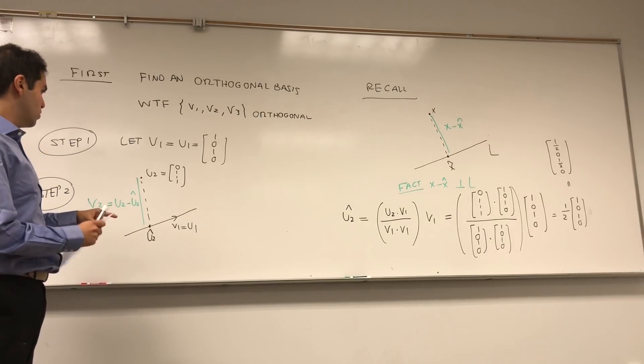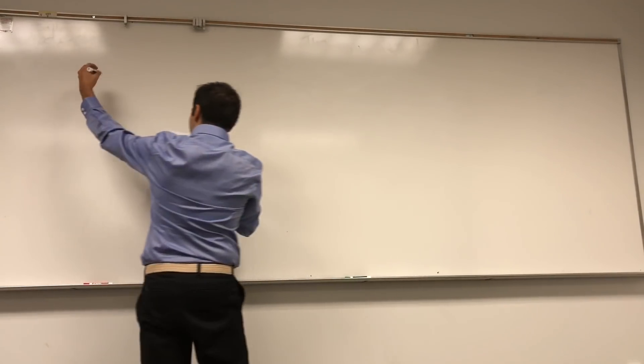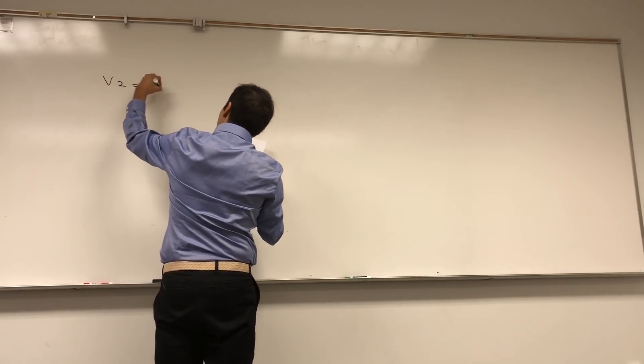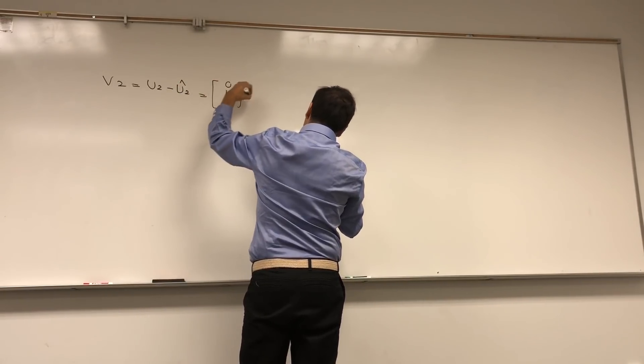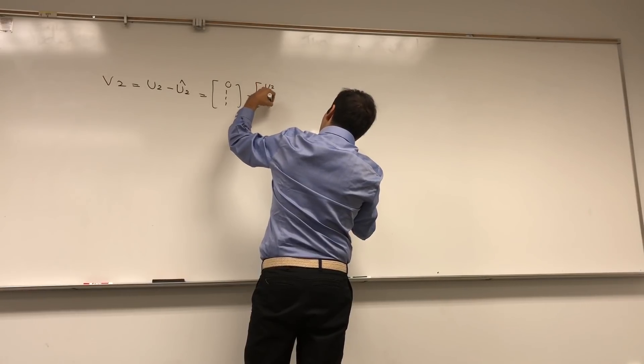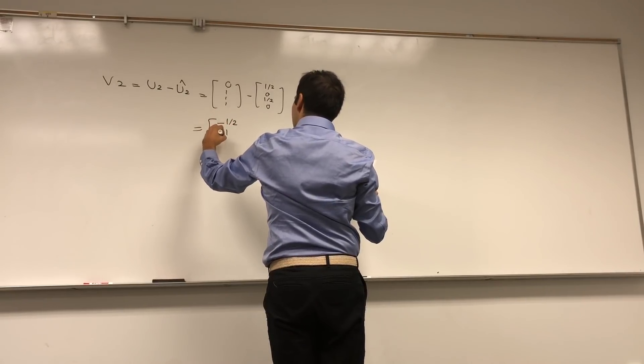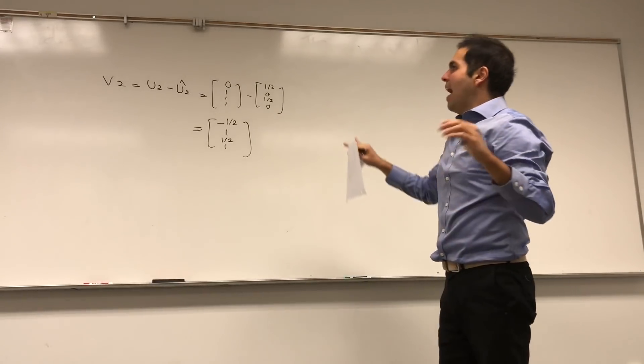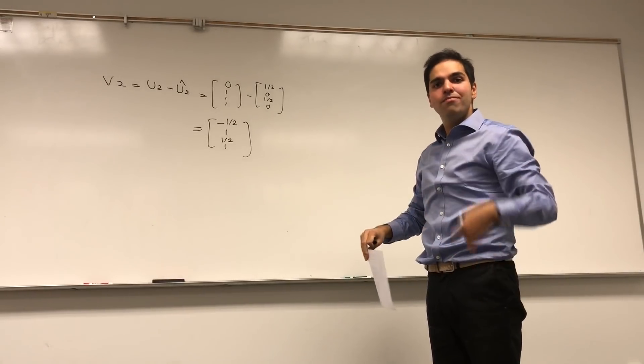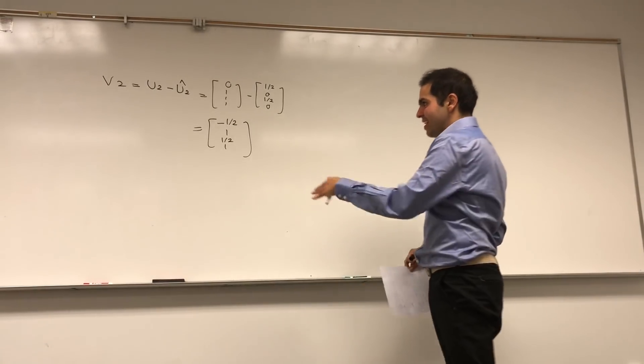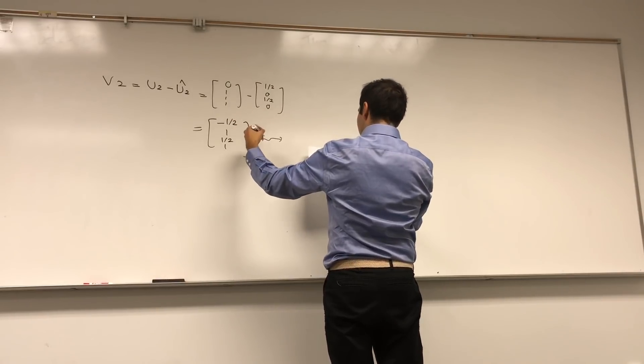So something times V1, and to find that something, all you do is you hug the vector U2 with U1. So it's U2 dot V1 over V1 dot V1 times V1. And if you do that, you have this calculation: U2 is 0, 1, 1, 1 dotted with 1, 0, 1, 0, divided by 1, 0, 1, 0 dotted with 1, 0, 1, 0. This huge number is just a number, and you multiply by the vector 1, 0, 1, 0. And if you calculate that, you get 1 half times 1, 0, 1, 0, which is 1 half, 0, 1 half, 0.